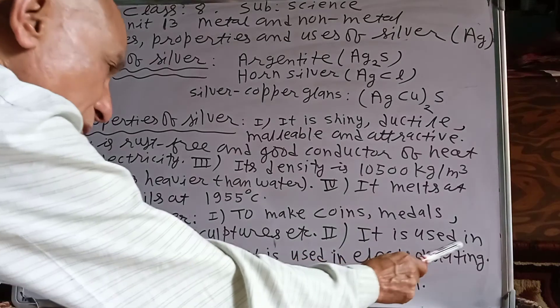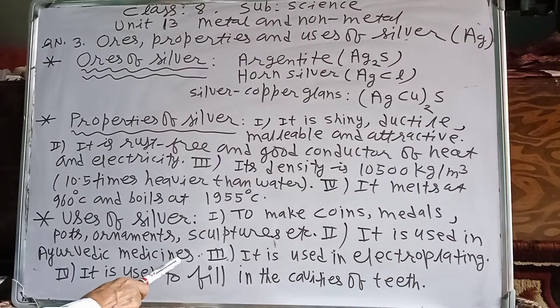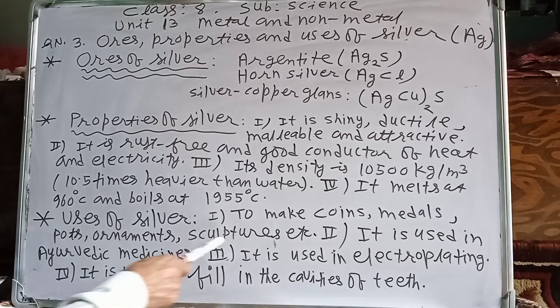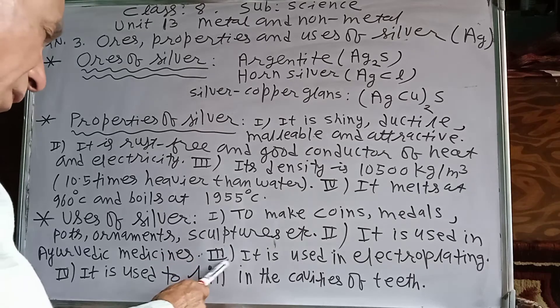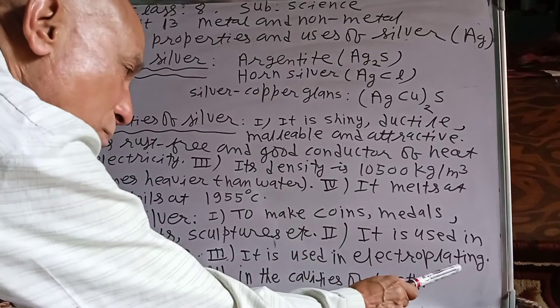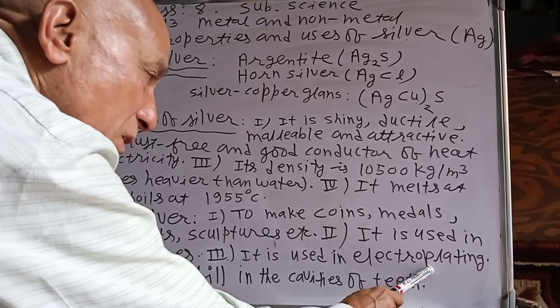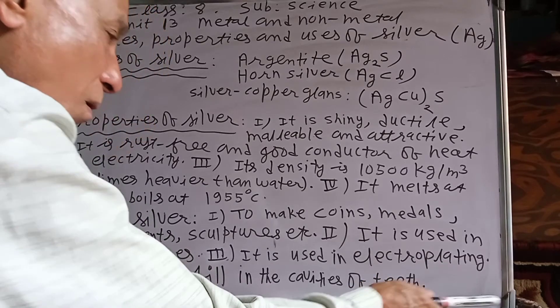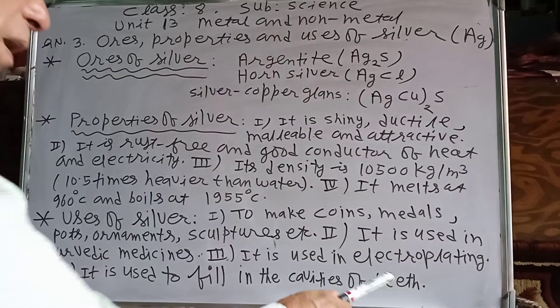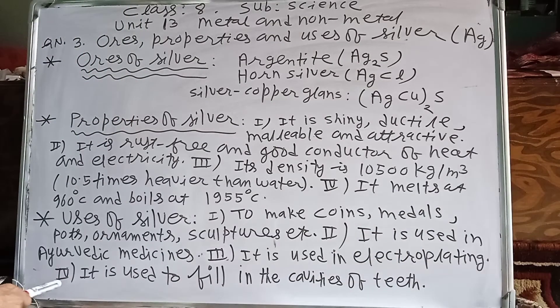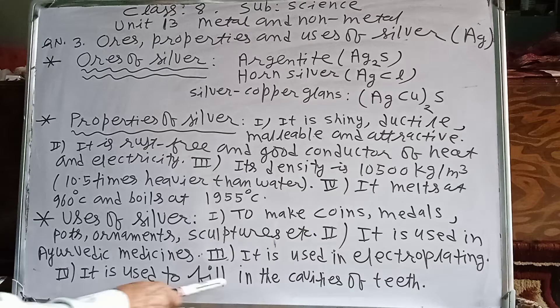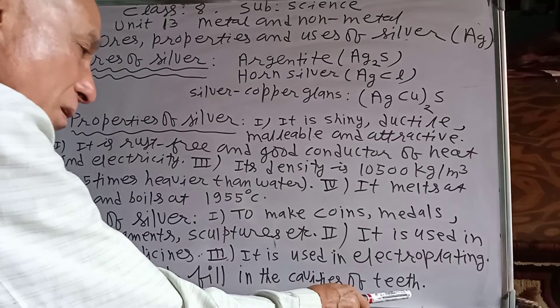Number 2, it is used in Ayurvedic medicines. It is mixed there. Number 3, it is used in electroplating. It is the process of coating or depositing of metal on another metal with the help of electricity. Number 4, it is used to fill in the cavities of teeth.